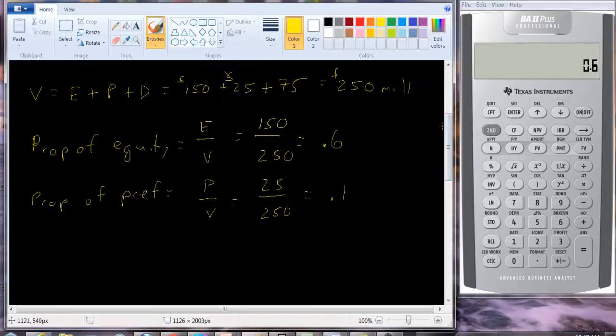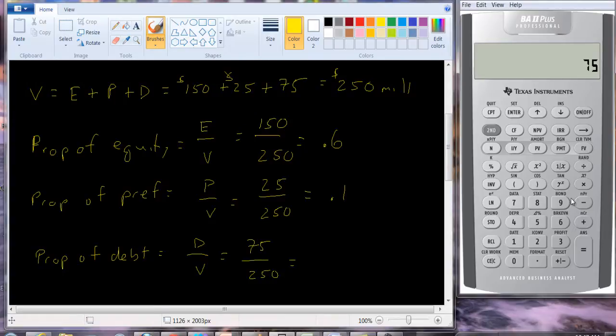And the proportion of debt is just going to be D over V, which is 75 over 250. And so we can just divide that out, 75 divided by 250 equals 30%. Actually, I didn't really need to do the calculation because these three numbers should add up to one, should add up to 100%. So, now that we have the proportions,